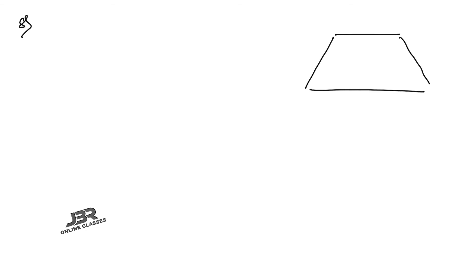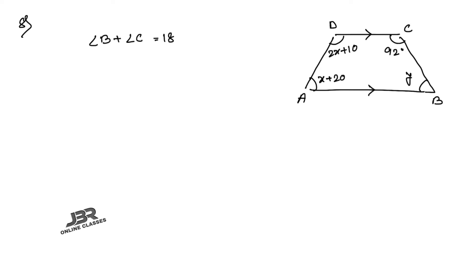Sum 8a: ABCD is a trapezium. The angles are: one angle = 2x + 10°, another = 92°, and the others are x + 20° and y. AB is parallel to DC. To find y: in a trapezium, angle B + angle C = 180°, so y + 92 = 180, giving y = 88°.